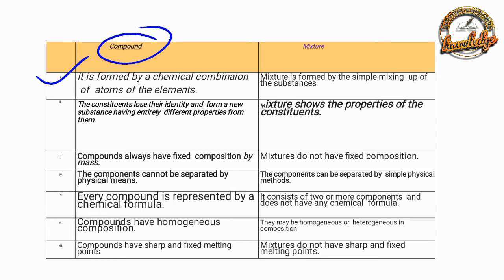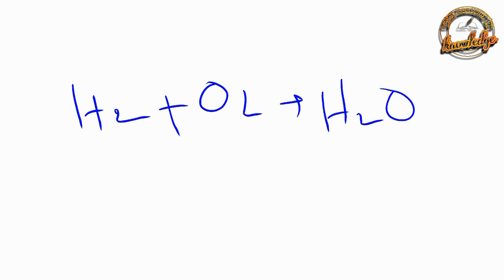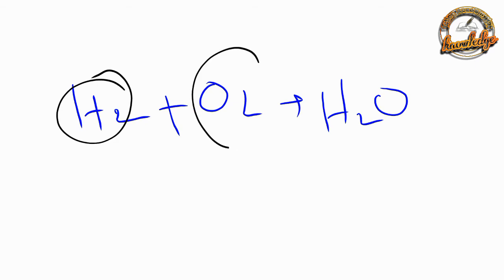The elements combine to form a compound. For example, H2 plus O2 gives H2O. This is a chemical combination — hydrogen and oxygen combine chemically to form water.